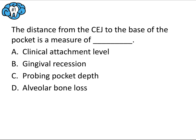Go ahead and pause the video, think through the question, and then we'll go over it together. For each question, let's break it down and start with what we know. The distance from the CEJ to the base of the pocket is a measure of which of the following. You may recognize this statement as a definition for clinical attachment loss, which is a synonym for clinical attachment level. So A is the correct answer.